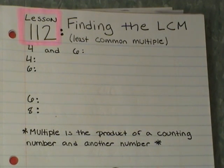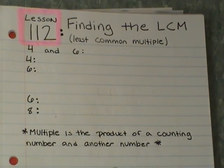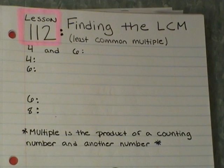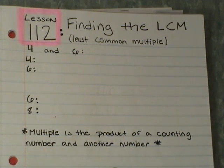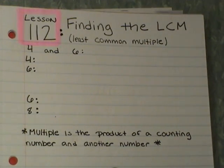To find the LCM — the least common multiple — we have to find all of the multiples of 4, and then all of the multiples of 6, and then look at the ones they have in common and find the smallest one. So that's what we're doing, and we're going to do it now.